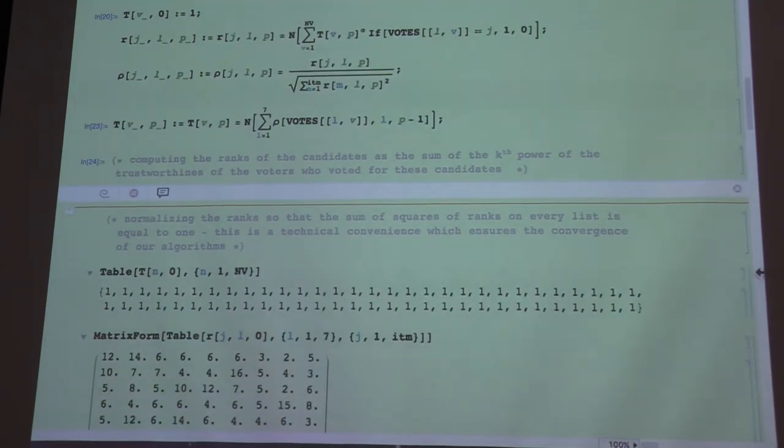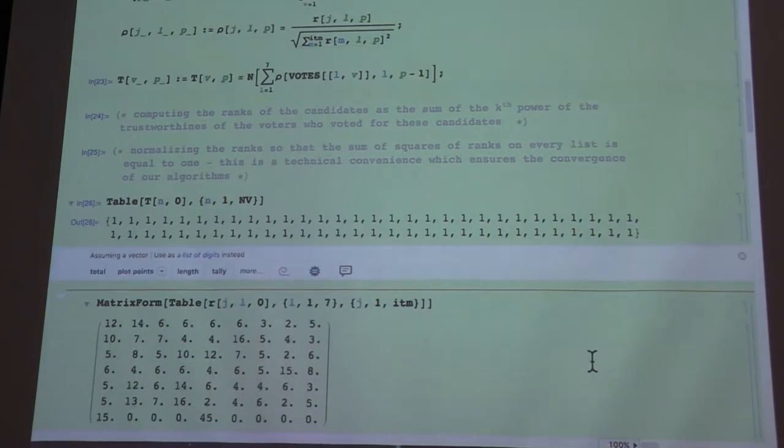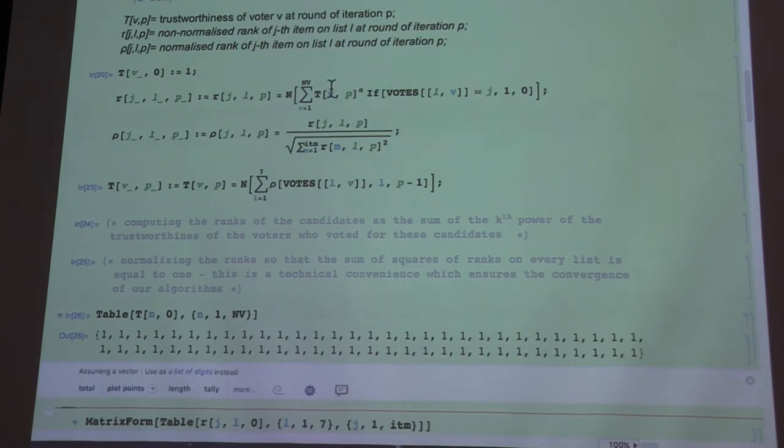So this is the table of initial trustworthiness. Everyone gets the same trustworthiness of 1. Now what will be the first round, zero-th round, of these r values? Well remember, r values are just sums of trustworthiness of voters to power alpha. If this is equal to 1, so this will be sum of 1 whenever voter v voted for item j.